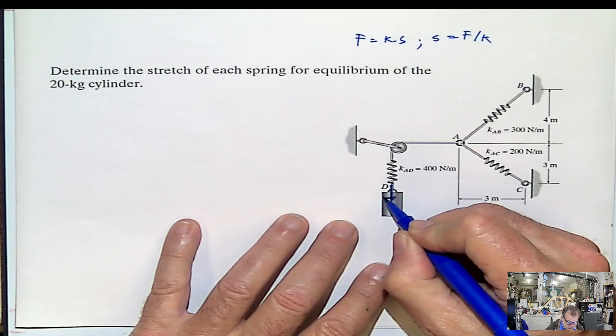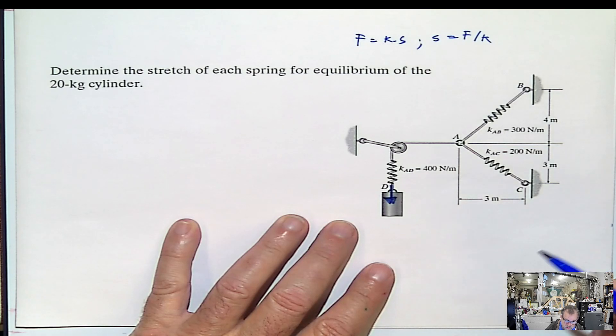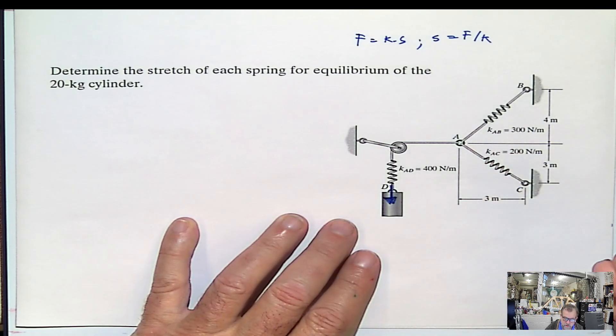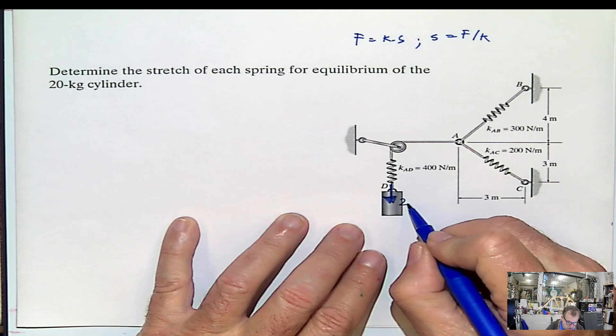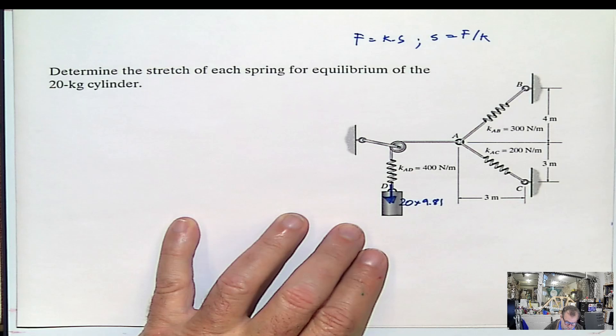Once again, remember, free body diagram. In this case, there are several free body diagrams, because the maximum amount of unknowns that we can have in a particular particle equilibrium free body diagram in 2D is 2, if we want to solve it in statics. So this is going to be 20 kilograms multiplied by 9.81 to convert it into newtons.